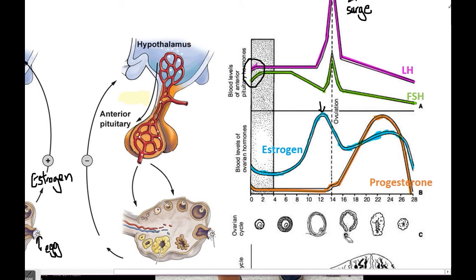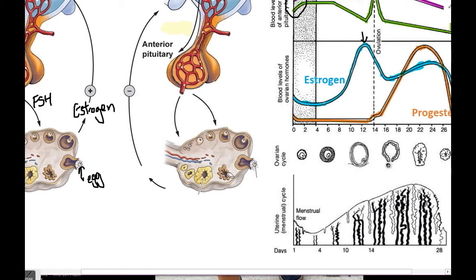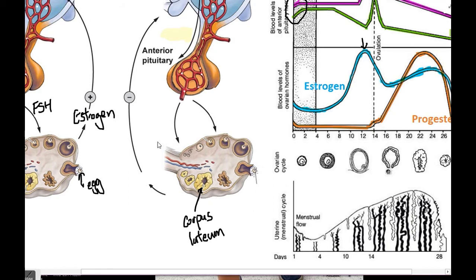After the LH surge, ovulation happens — the egg is released from the follicle. Because the follicle has finished developing, the level of estrogen is now going to decline a little bit. The remaining material after ovulation is going to change into a transient structure called the corpus luteum. The corpus luteum is not going to stay there forever — it will be there for approximately the next 14 days. While the corpus luteum is present, its function is to produce another hormone: progesterone.